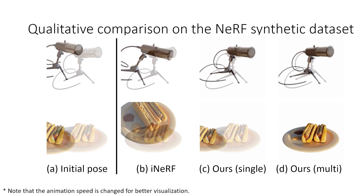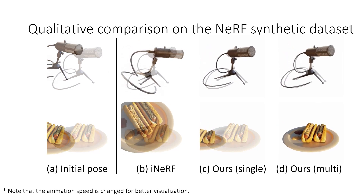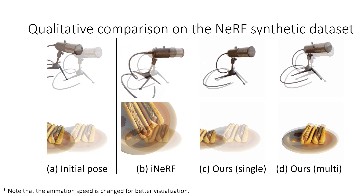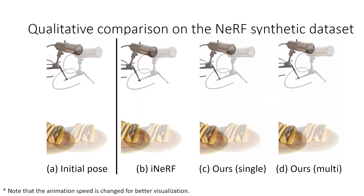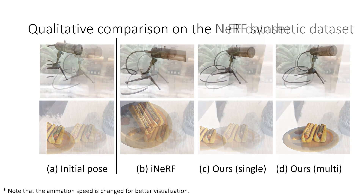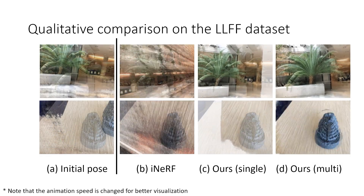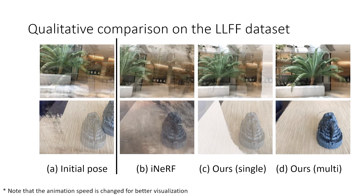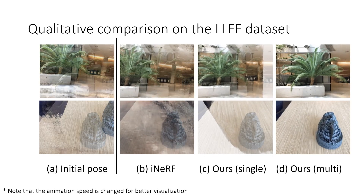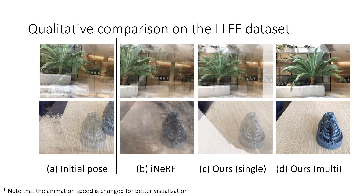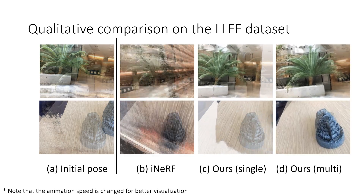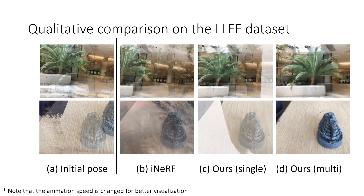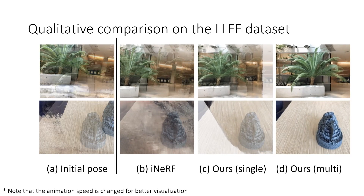Here, we show the qualitative comparison on the NeRF synthetic dataset. The animation speed is adaptive for better visualization, as iNeRF takes seven times longer for optimization than our proposed method. When using more complex scenes, a single pose hypothesis easily gets trapped in local minima during the optimization process, while our parallelized Monte Carlo sampling module is more stable, as some of its samples are closer to the target region and thus guide the optimization in the right direction.